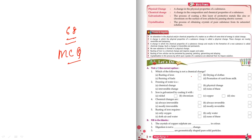Rusting of iron is a chemical change. Burning of fuels is also a chemical change. Drying of clothes is not a chemical change. So option B is the right answer.